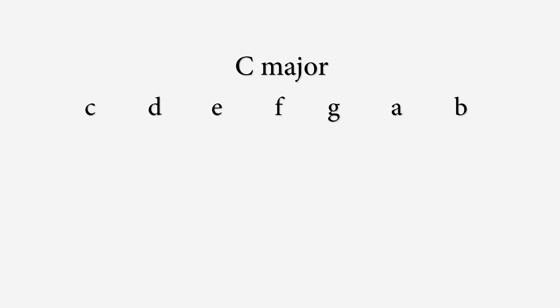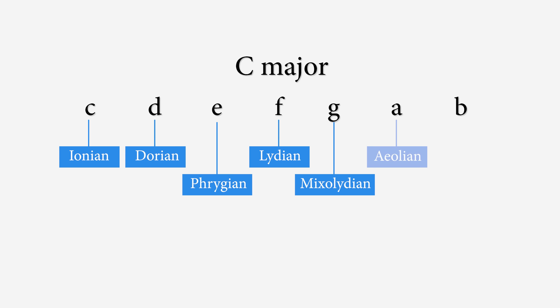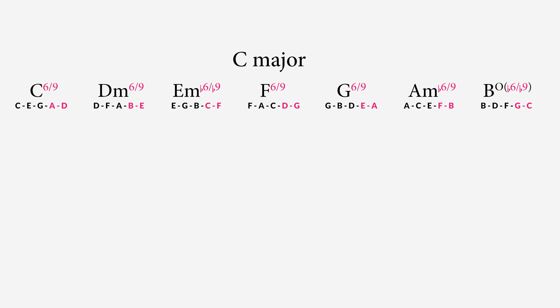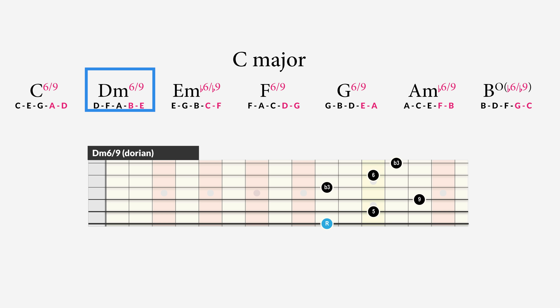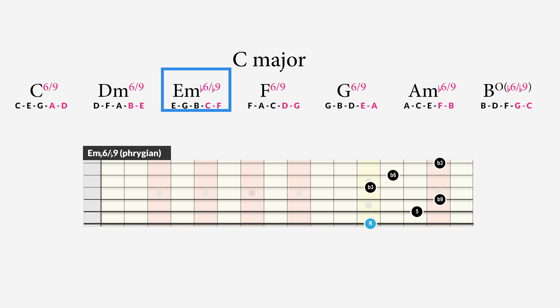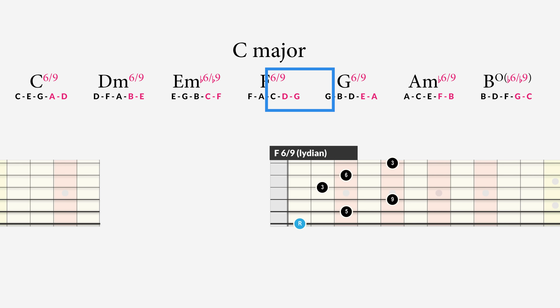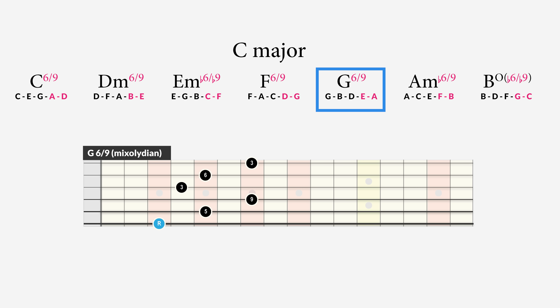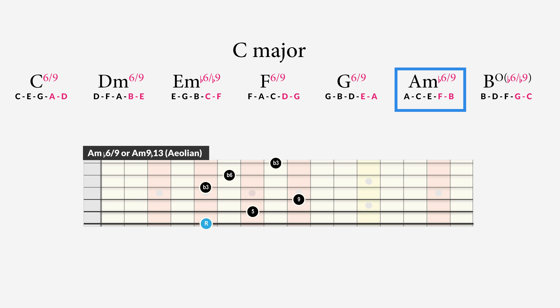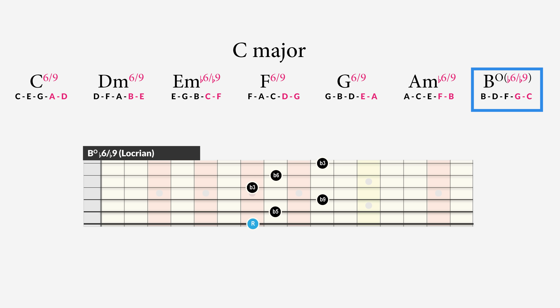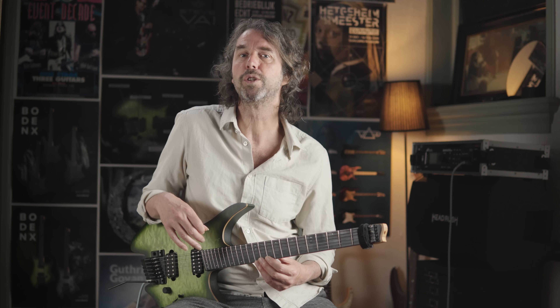In this way we could walk through the modes by starting each time on the next note of the major scale, each time creating a new mode. If we do so we get a Dorian D-minor 6-9 on the 2nd degree, the Phrygian E-minor flat 6 flat 9 on the 3rd degree, the Lydian F6-9 on the 4th degree, the Lydian G6-9 on the 5th degree, the Aeolian A-minor 9 flat 13 on the 6th degree, and a Locrian B flat 6 flat 9 on the 7th degree. This is a good way to study these arpeggios and learn the notes on the neck of the guitar. All these arpeggios in a row sound like this.